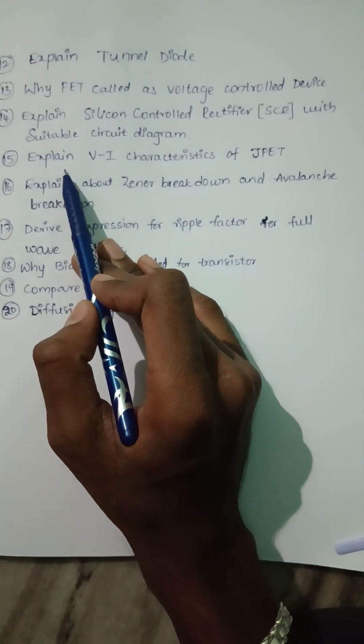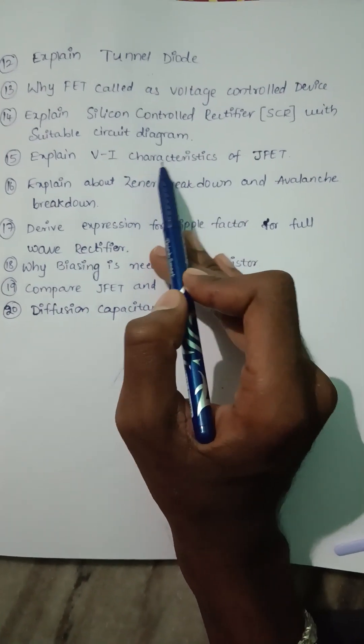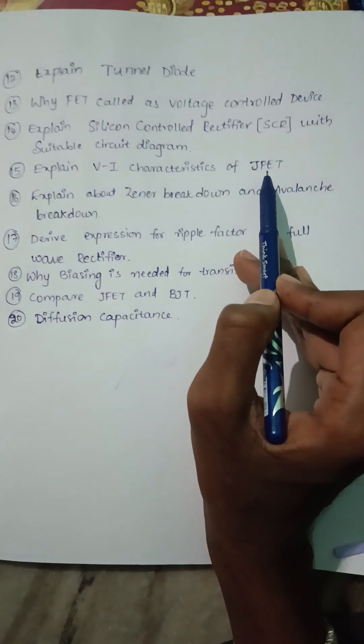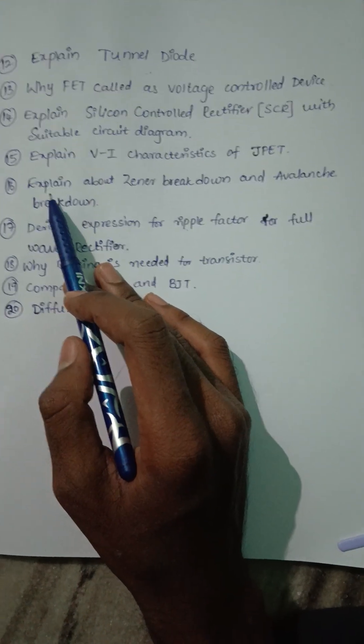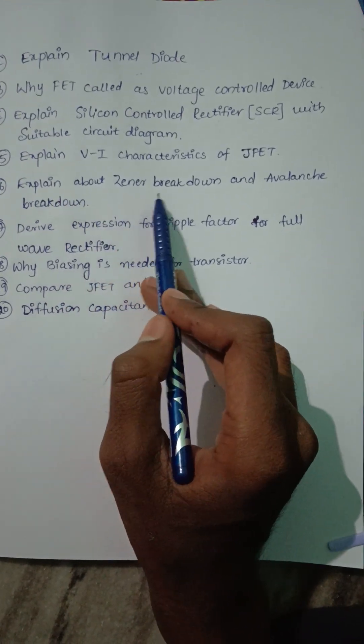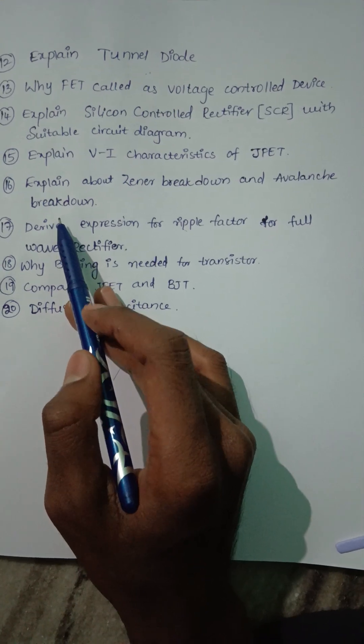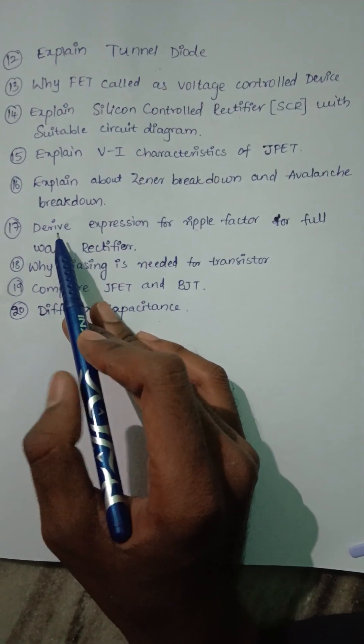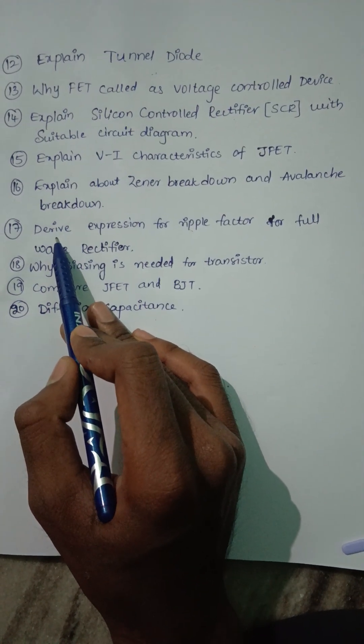Next question is explain voltage-current characteristics or VI characteristics of JFET. Another question is explain Zener breakdown and avalanche breakdown. These are very important for the second unit.